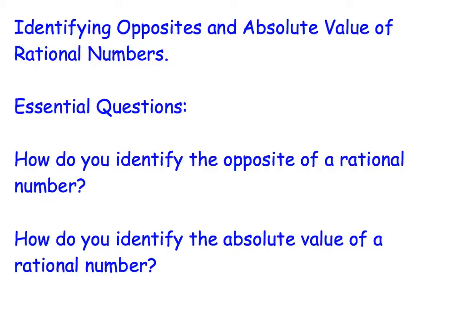I also want to make sure you understand that absolute value — the only thing you have to remember about absolute value is that it's the distance from zero on the number line, and it's always going to be a non-negative or positive value, because distance does not indicate a direction from zero. It's just distance. So when you use a number line to find absolute value, you just count off how many places it is from that number to zero.